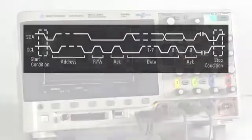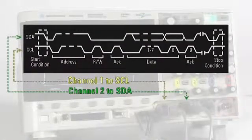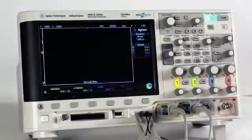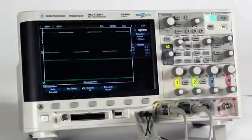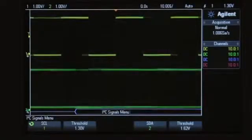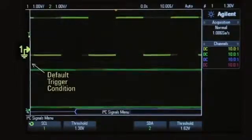Before we begin, go ahead and connect channel 1 to your serial clock signal and channel 2 to your serial data signal. Then press Auto Scale. You should see what appears to be an untriggered display of two digital signals. Your scope is actually triggering on rising edges of channel 1, which is the scope's default trigger condition.